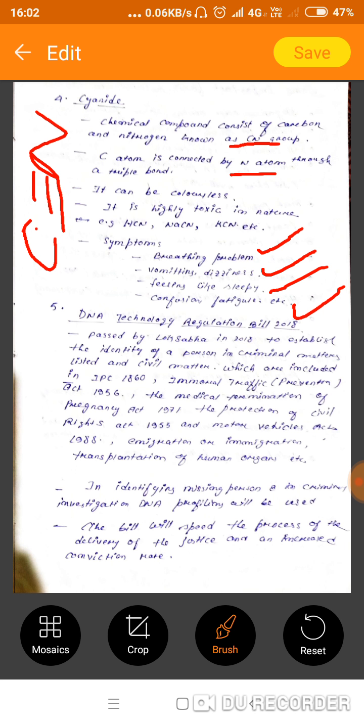Next is the DNA Technology Regulation Bill 2018. This bill was passed by Lok Sabha in the year 2018 to establish the identity of a person in criminal matters and civil matters which are included in IPC 1860, that is Indian Penal Code 1860, Immoral Traffic Prevention Act 1956, the Medical Termination of Pregnancy Act 1971, the Protection of Civil Rights Act 1955, and Motor Vehicle Act 1988.